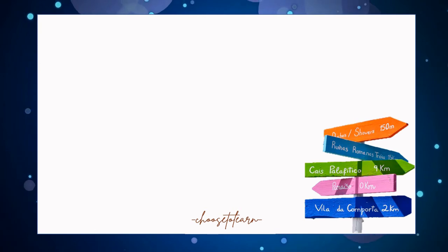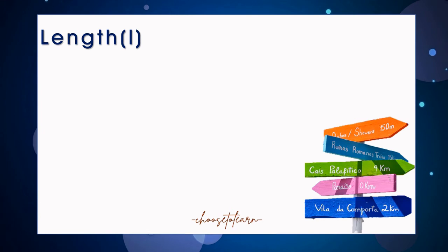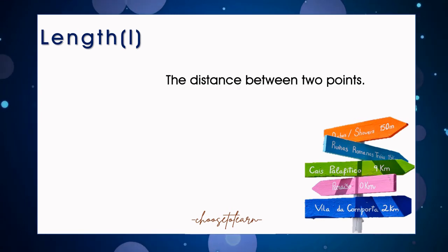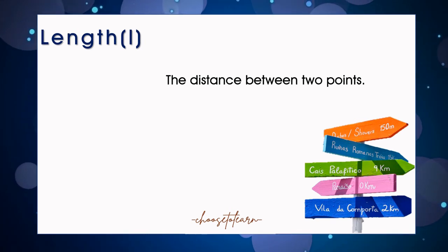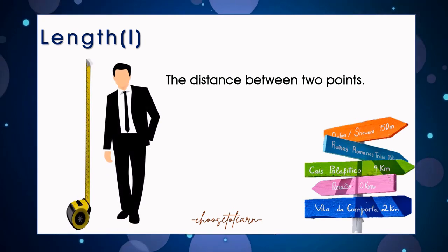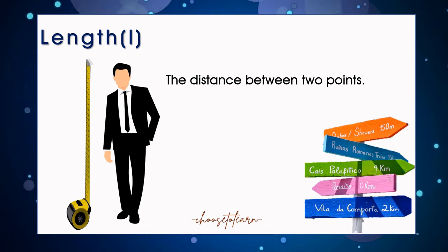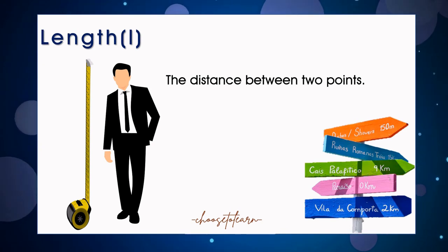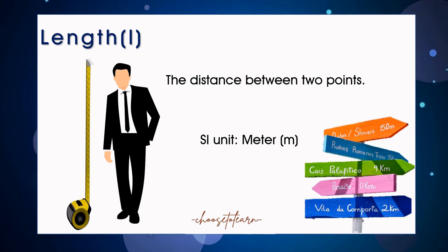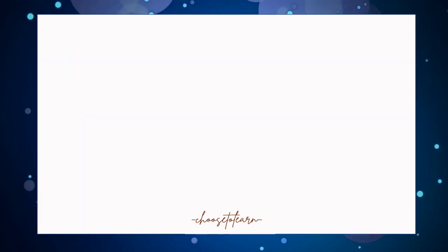Let's go first to length. Length with the symbol of small letter L. It refers to the distance between two points. It does not matter if it is width or height, all are length measurements. For example, if you want to measure your body length, you should find the length between your head and your toe. The SI unit of length is meter. Other units are millimeters, centimeters, kilometers.